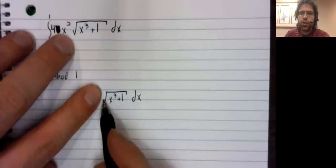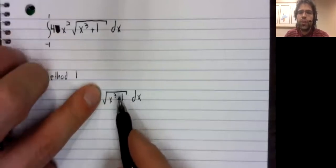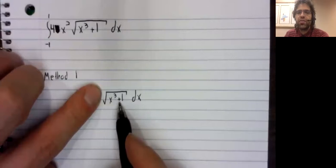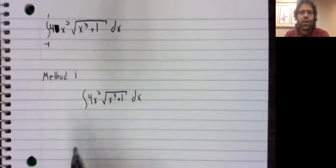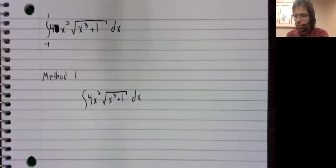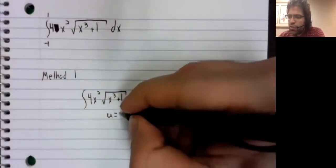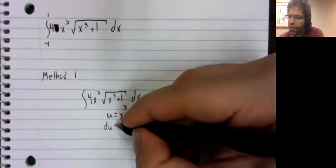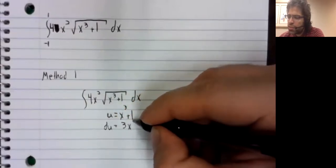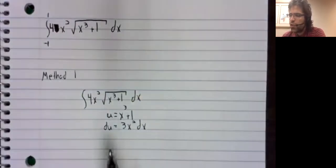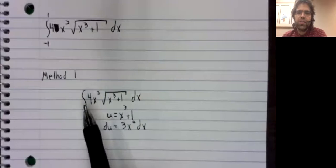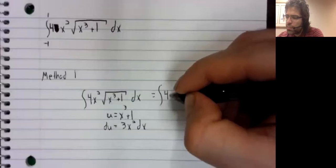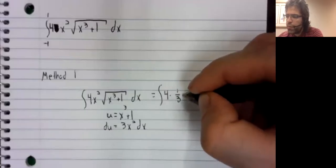To use u-substitution, you should have the derivative of this inside function, which we more or less do. We come close enough that we can deal with it. We are off by a constant.